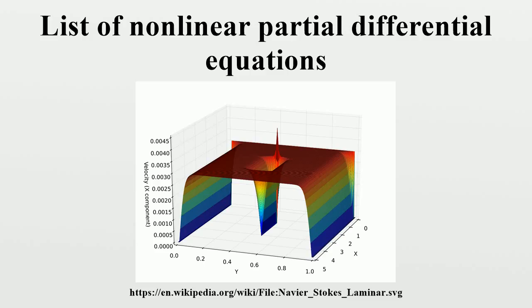An example of singularity formation is given by the Ricci flow. Hamilton showed that while short-time solutions exist, singularities will usually form after a finite time. Perelman's solution of the Poincaré conjecture depended on a deep study of these singularities, where he showed how to continue the solution past the singularities.